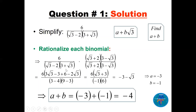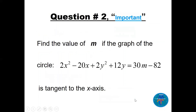Use the FOIL method — multiply carefully. For the first bracket multiplied by its conjugate, we get the difference of two squares: 3 minus 4. The second bracket gives 9 minus 3. When you cancel the 6, you have minus 3 minus square root of 3. Comparing with a plus b√3, a equals minus 3 and b equals minus 1, so a plus b equals minus 4.